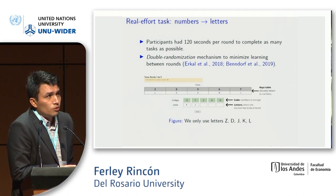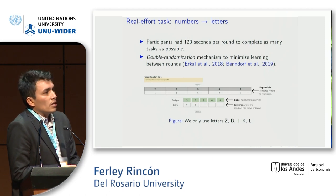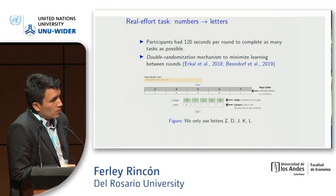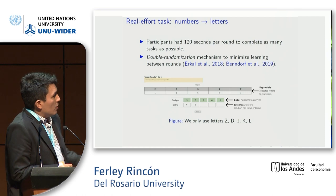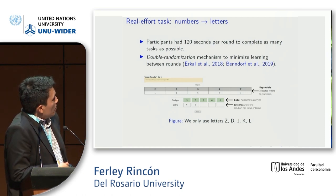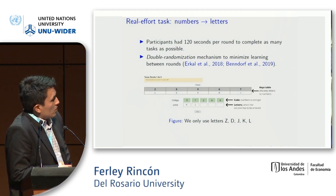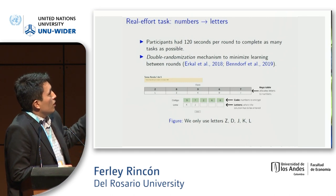In each round, participants have 120 seconds to complete as many tasks as possible. We use a randomization mechanism to minimize learning between rounds — we randomize the correspondence between numbers and letters, and also randomize the order of numbers in the code. Participants must use the key table to complete the encoding of numbers to letters.